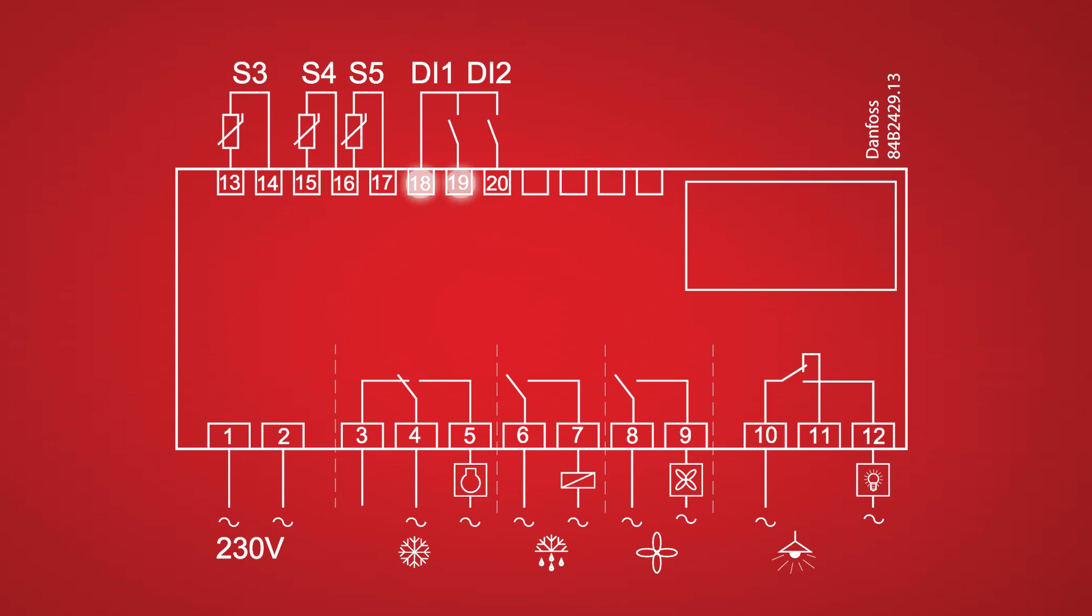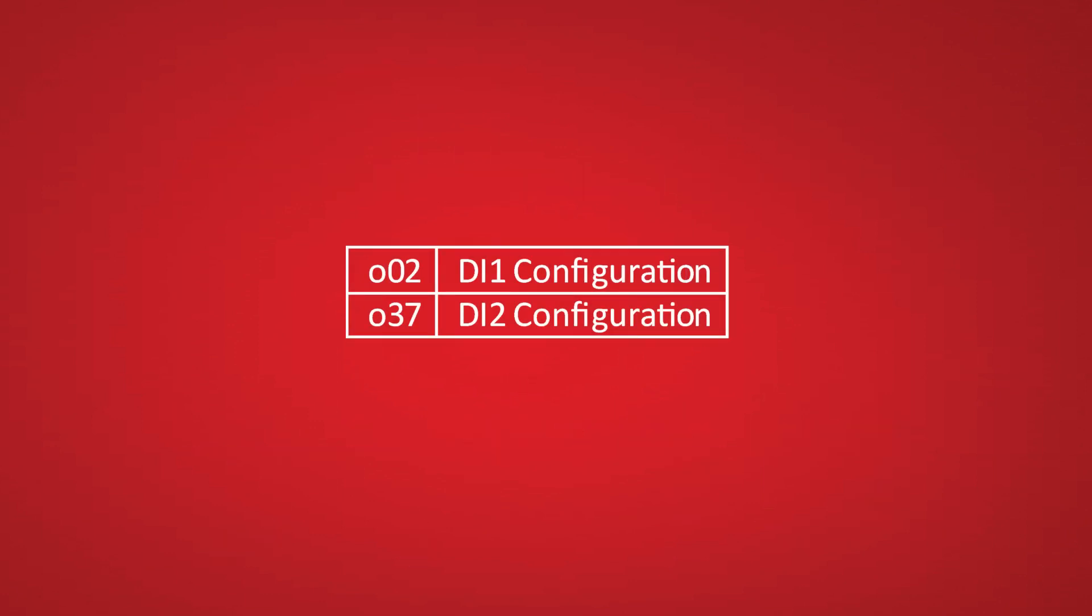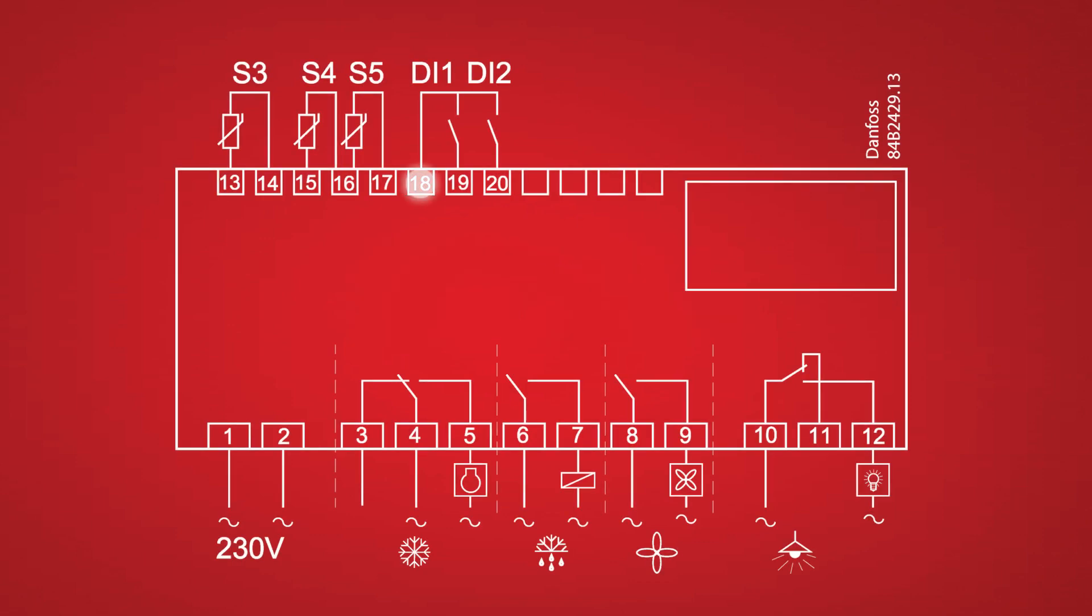Terminals 18, 19, and 20 are for the digital inputs 1 and 2 which are set in parameters 002 and 037. Terminal 18 is a shared common for both of these digital inputs.